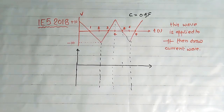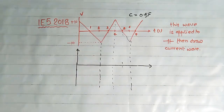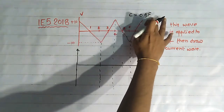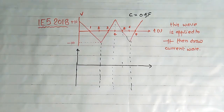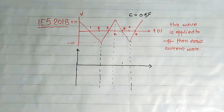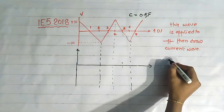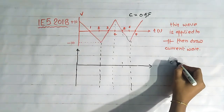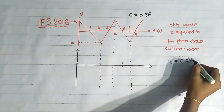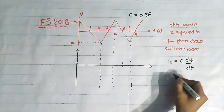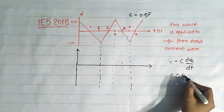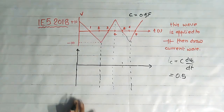Now see this question, which was asked in ES 2018. Here a voltage waveform is applied to a pure capacitor of 0.5 farad, and we have to draw the current waveform. This is straightforward because capacitor current ic equals C times dVc/dt, and C is 0.5 farad.